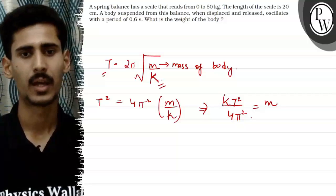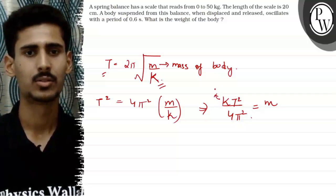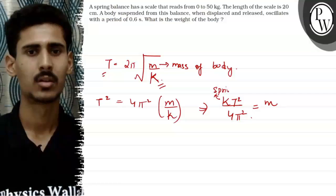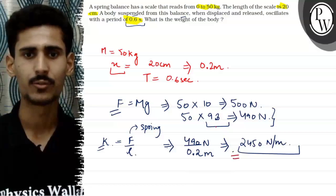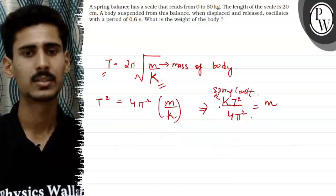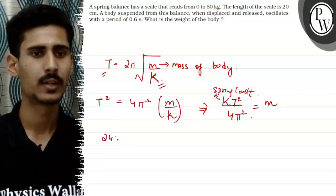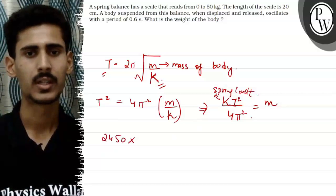So upon further calculating our K, which was the spring constant, what did we have to find previously? We have found the K value of 2450 Newtons per meter. So we will place this value here. 2450 into T square.